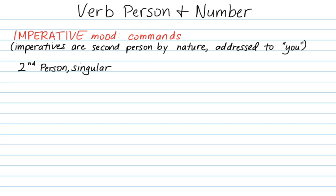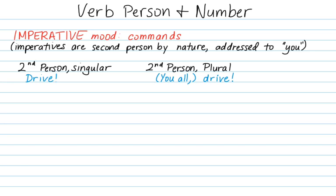We want to look at the singular and the plural imperative. The singular imperative in English would be 'drive,' and the plural imperative in English would also be 'drive.' You can differentiate by adding 'you all drive.' In Greek, the ending for the singular imperative is -e, so to command one person to drive, you say 'eloune.' To command multiple people to drive, it's 'elounete,' with the ending -ete.